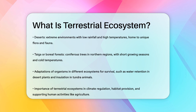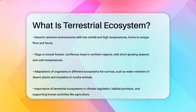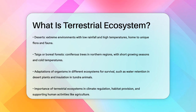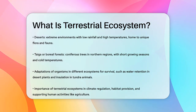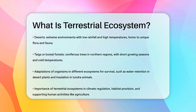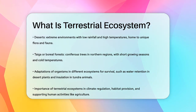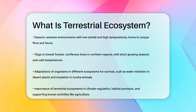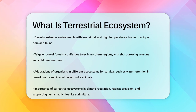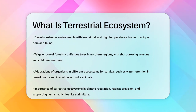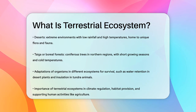In all these ecosystems, organisms have evolved special adaptations to survive. For example, plants in deserts have thick waxy coatings to prevent water loss, while animals in the tundra have thick fur to keep warm. Terrestrial ecosystems also play a critical role in maintaining the balance of our planet — they help regulate the climate, provide habitats for countless species, and support human activities like agriculture and forestry.